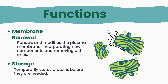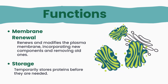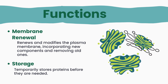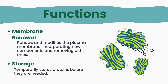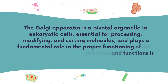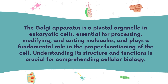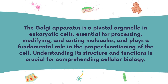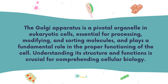The Golgi apparatus actively renews and modifies the cell's membrane by integrating new components and removing old ones. Simultaneously, it temporarily stores proteins, ensuring their timely availability for cellular activities when needed. The Golgi apparatus is a pivotal organelle in eukaryotic cells, essential for processing, modifying, and sorting molecules, and plays a fundamental role in the proper functioning of the cell.